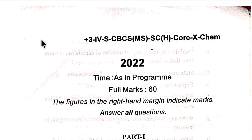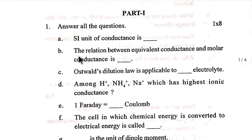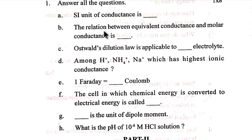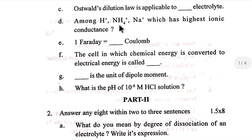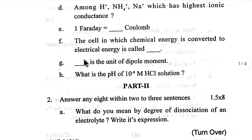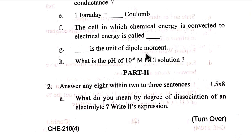Fourth semester chemistry core. Number one: The SI unit of conductance is dash. The relation between equivalent conductance and molar conductance is dash. Ostwald's dilution law is applicable for which type of electrolyte? Among H+, NH4+, and Na+, which has the highest ionic conductance? One Faraday equals dash coulombs. The cell in which chemical energy is converted to electrical energy is called dash. Dash is the unit of dipole moment.